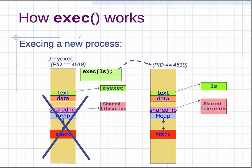Looking at the process address space: when you exec a new process, everything in the current process — say process ID 4519 — is wiped out. A new program is loaded from disk. The text segment now points to the ls command and its shared libraries. The stack is reinitialized, the heap is completely zeroed out, and execution starts fresh from the new program.